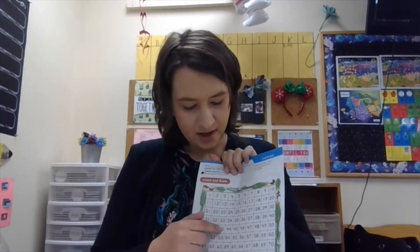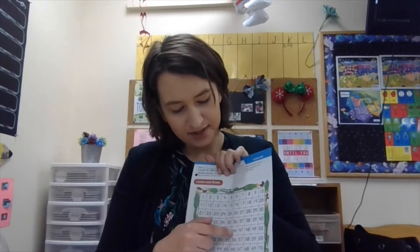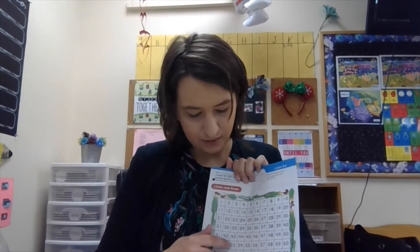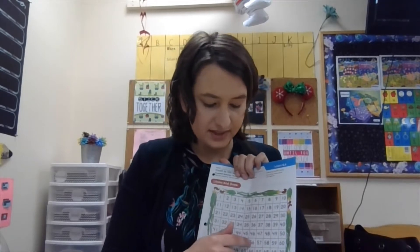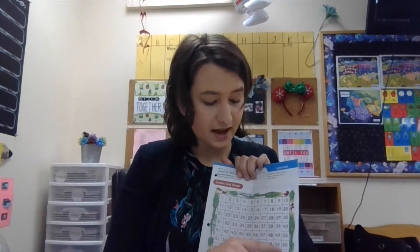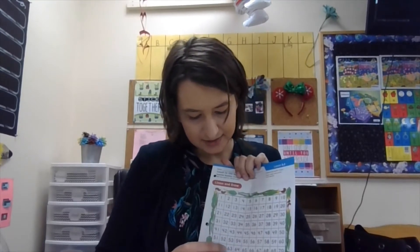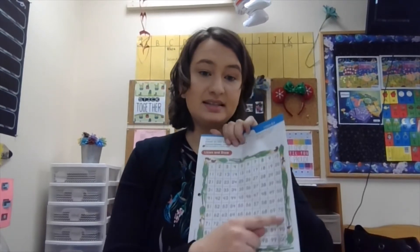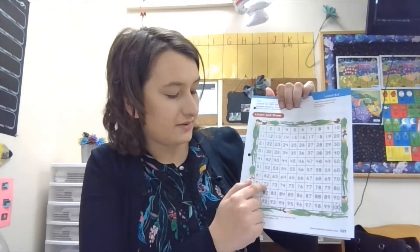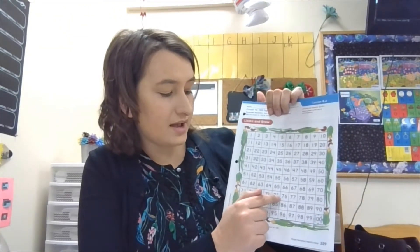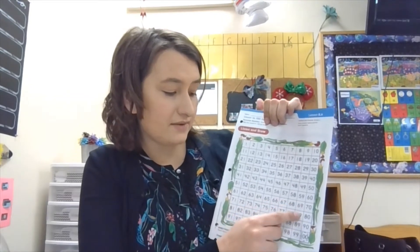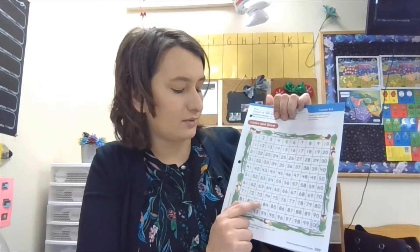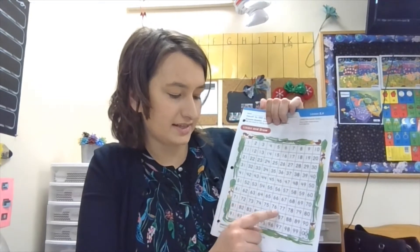Forty-one, forty-two, forty-three, forty-four, forty-five, forty-six, forty-seven, forty-eight, forty-nine, fifty. Fifty-one, fifty-two, fifty-three, fifty-four, fifty-five, fifty-six, fifty-seven, fifty-eight, fifty-nine, sixty. Sixty-one, sixty-two, sixty-three, sixty-four, sixty-five, sixty-six, sixty-seven, sixty-eight, sixty-nine, seventy. Seventy-one, seventy-two, seventy-three, seventy-four, seventy-five, seventy-six, seventy-seven, seventy-eight, seventy-nine, eighty. Eighty-one, eighty-two, eighty-three, eighty-four, eighty-five, eighty-six, eighty-seven, eighty-eight, eighty-nine, ninety. Are you still counting with me? Make sure you're saying it out loud.